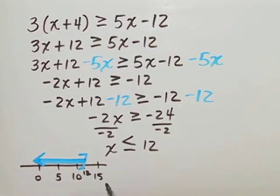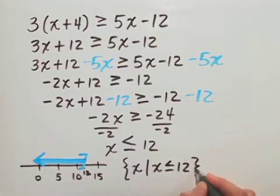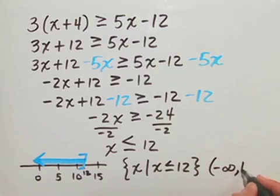We're also asked to express the solution set in both set builder notation and interval notation. So we take our solution and write it in set builder notation. The set of all x such that x is less than or equal to 12. And the interval notation would simply be anything from negative infinity up to and including 12.